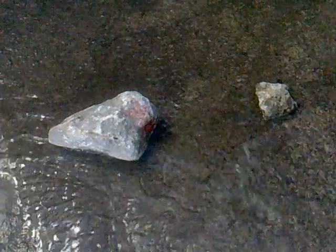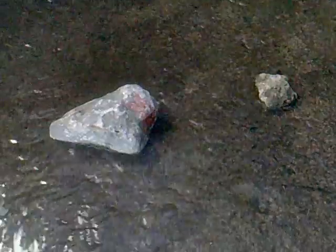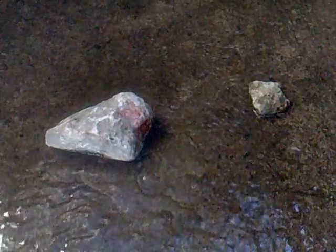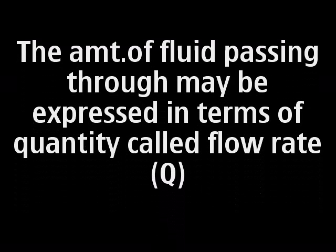Turbulent flow is marked by irregular motion of the fluid. Examples of this are flowing water that hits a rock and the wind during stormy days.